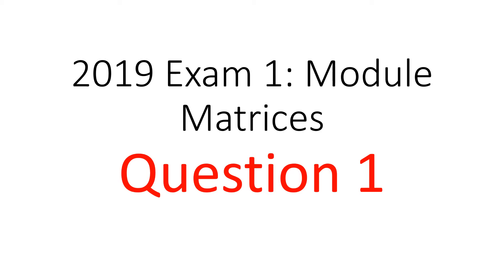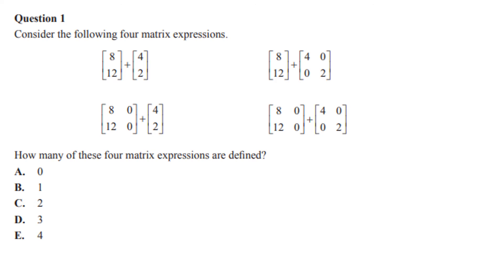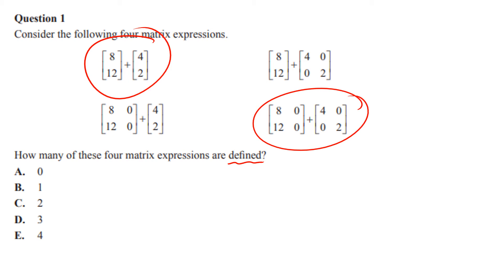2019 exam one, module matrices, question one. This one's fairly straightforward — they're basically asking how many of these are defined, in other words which ones can you do. It's this one and this one — they can be done because when you're adding, they must be the same order, is the correct phrase to use.